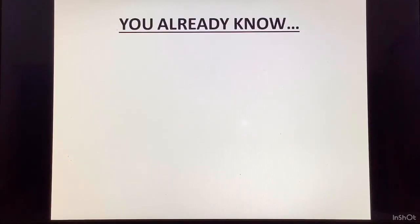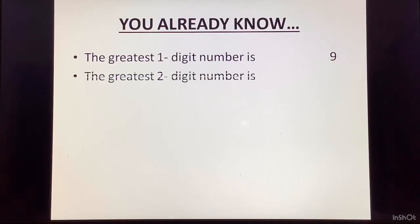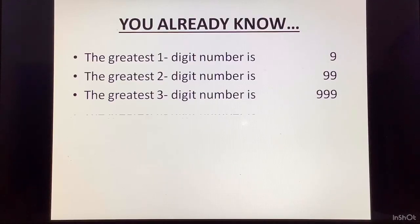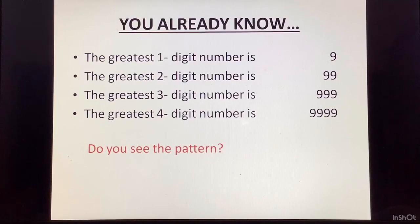You already know a lot about numbers. The greatest one digit number is 9. The greatest two digit number is 99. And the greatest three digit number is 999. The greatest four digit number is 9999. Do you see a pattern here? The pattern is one digit, the greatest number is 1 nine. Two digit, the greatest number is 2 nines. Three digit, the greatest number is 3 nines. And the four digit greatest number is 4 nines.